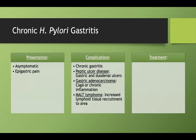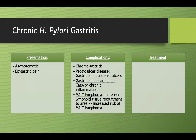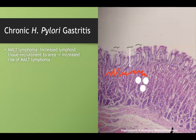Another complication — rare, but seen in textbooks — is MALT lymphoma. All this inflammation recruits lymphoid tissues to the site, activating them to help with the inflammation. The problem is this can over-activate and actually precipitate a lymphoma.